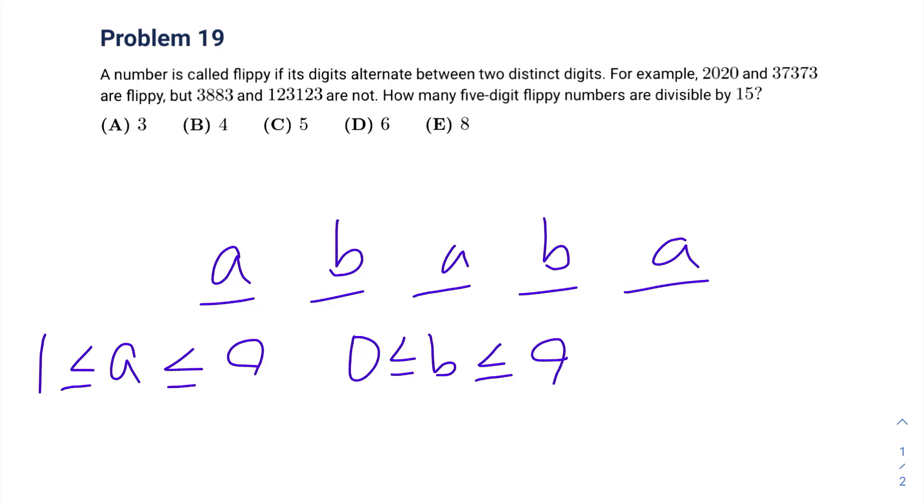If a number is divisible by 15, it is divisible by 5 and 3. If a number is divisible by 5, then its units digit must be 0 or 5. But we already know that A cannot be 0, so A must be equal to 5. So we can replace all these with 5.